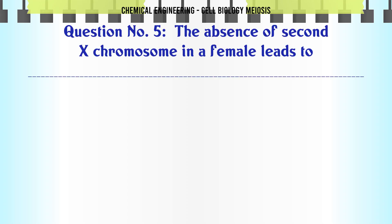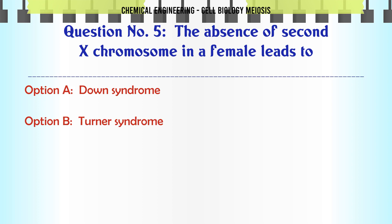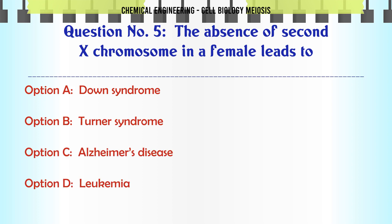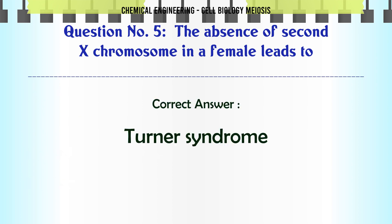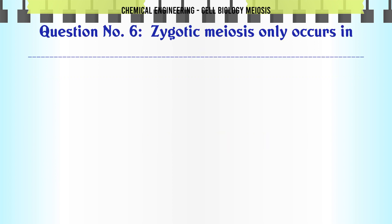The absence of the second X chromosome in a female leads to: A. Down syndrome. B. Turner syndrome. C. Alzheimer's disease. D. Leukemia. The correct answer is Turner syndrome.